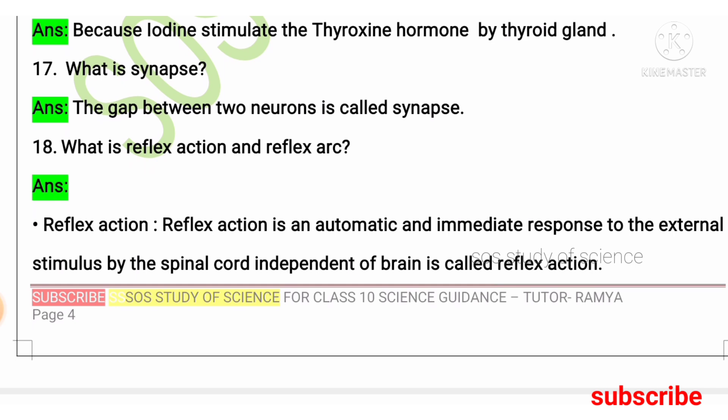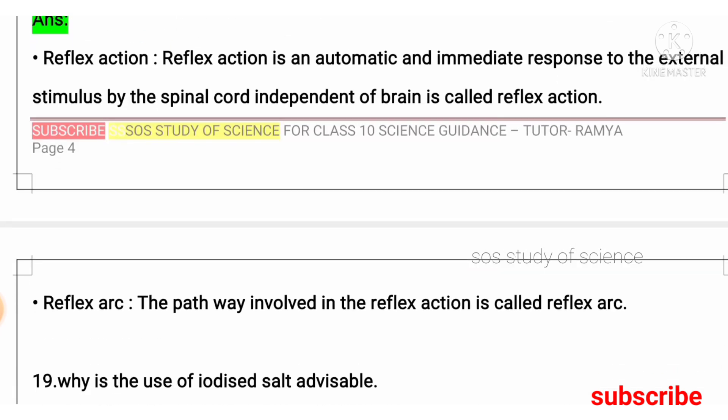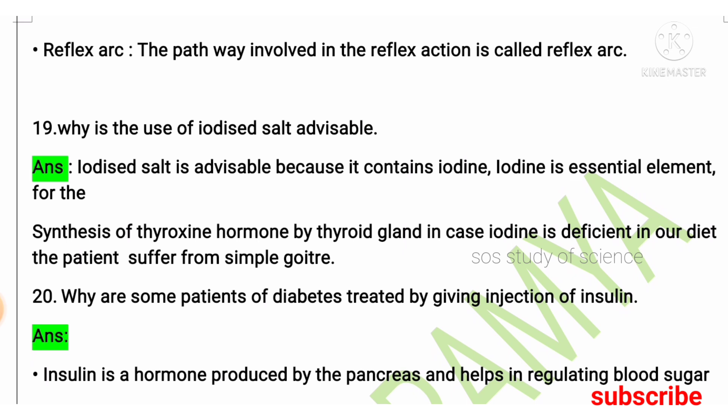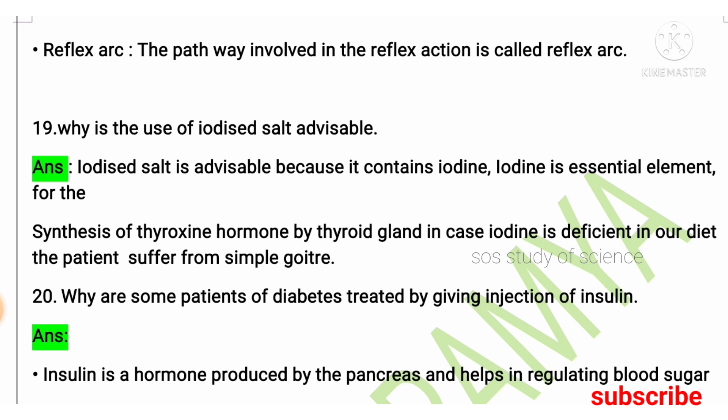What is the difference between reflex action and reflex arc? Reflex action is the sudden response to a stimulus. Reflex arc is the pathway which is involved in the reflex action. Regarding iodized salt: iodine is very important for the synthesis of the thyroxine hormone by the thyroid gland, so it is very important to include iodized salt in our diet.